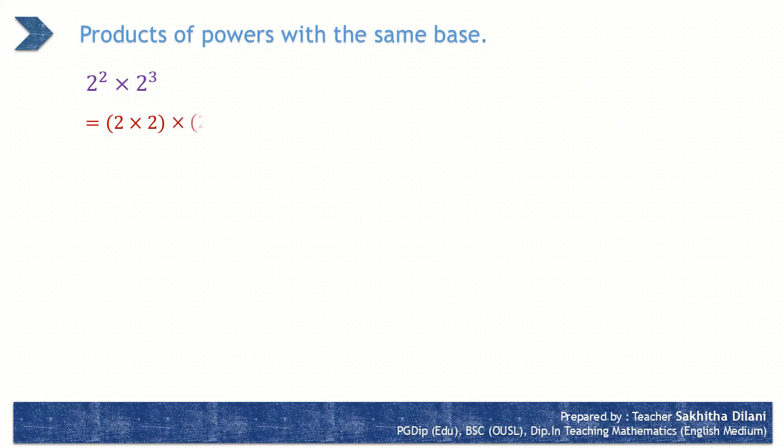Consider the product of 2 to the power 2 and 2 to the power 3. You can write this by expanding. 2 to the power 2 means 2 is repeatedly multiplied 2 times, so it can be written as 2 into 2. 2 to the power 3 means 2 is repeatedly multiplied 3 times, so it can be written as 2 into 2 into 2.